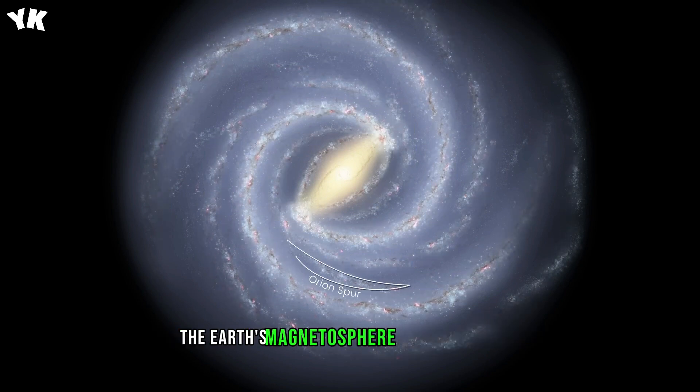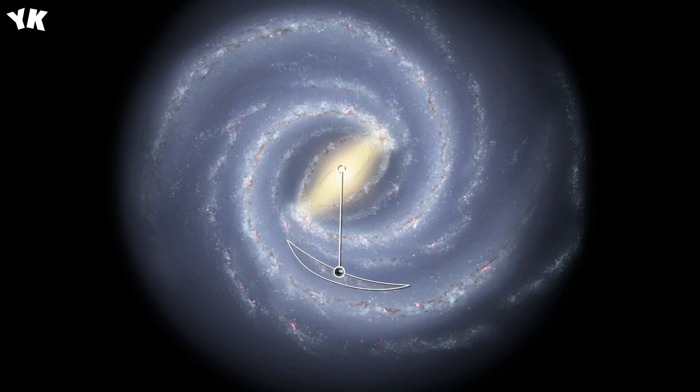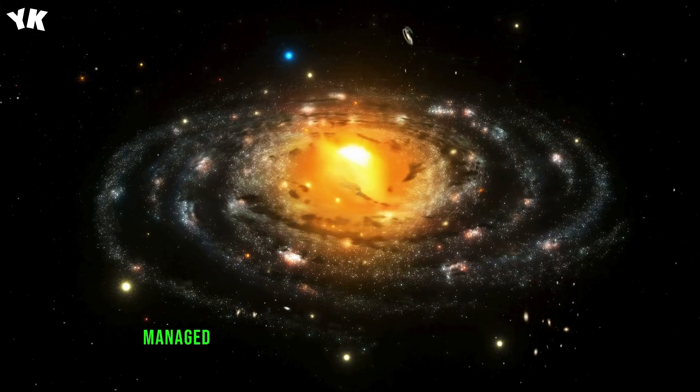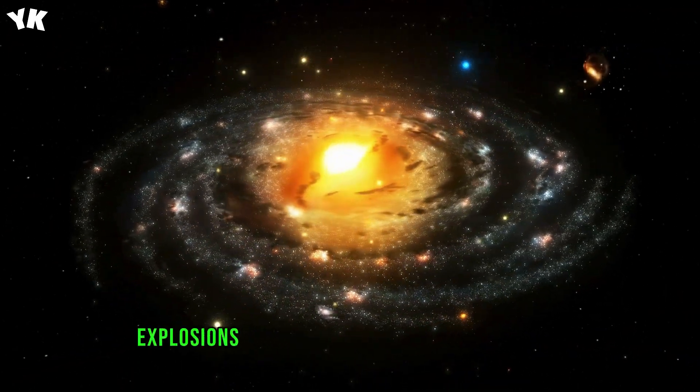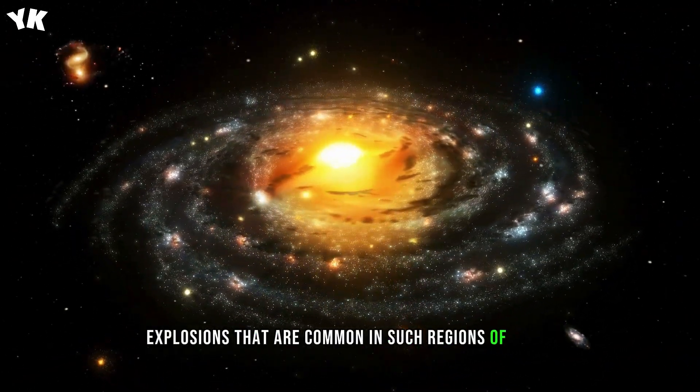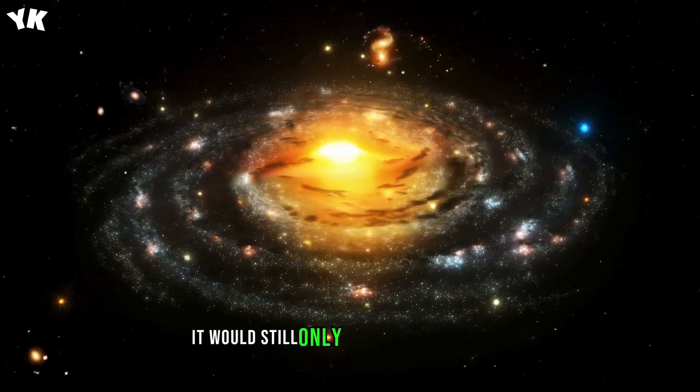The Earth's magnetosphere would no longer protect us from radiation. Suppose we somehow managed to pass through this area at a safe distance from supernova explosions that are common in such regions of space.